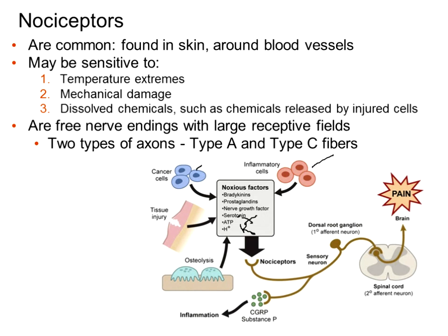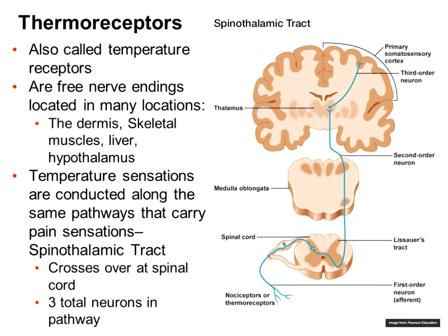Nociceptors tend to have large receptive fields and can be either fast or slow adapting — both tonic and phasic adaptation. Some have type A neuron fibers — myelinated, large diameter, very fast conduction — while some are C fibers, non-myelinated, smaller diameter, meaning the action potential travels very slowly. That slow conduction is the throbbing, sustaining pain that keeps you aware you've been hurt. Temperature extremes and itch are also sometimes tied to these receptors.